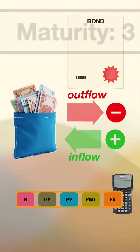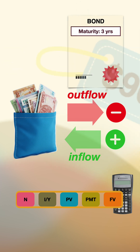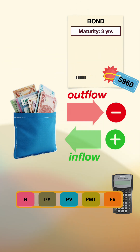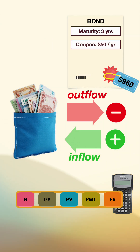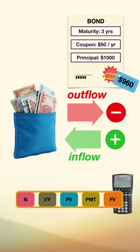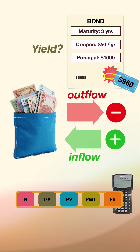Imagine an investment opportunity that matures in three years is currently priced at $960, and you're promised a $50 payment at the end of each year. The $1,000 principal is returned to you at maturity. What is the projected yield of this investment?